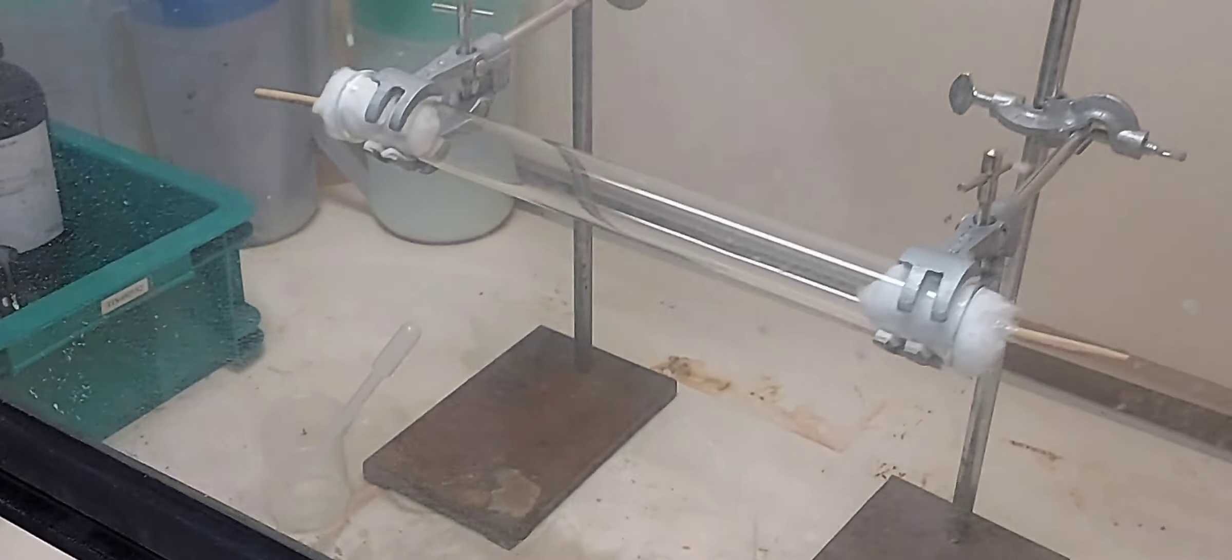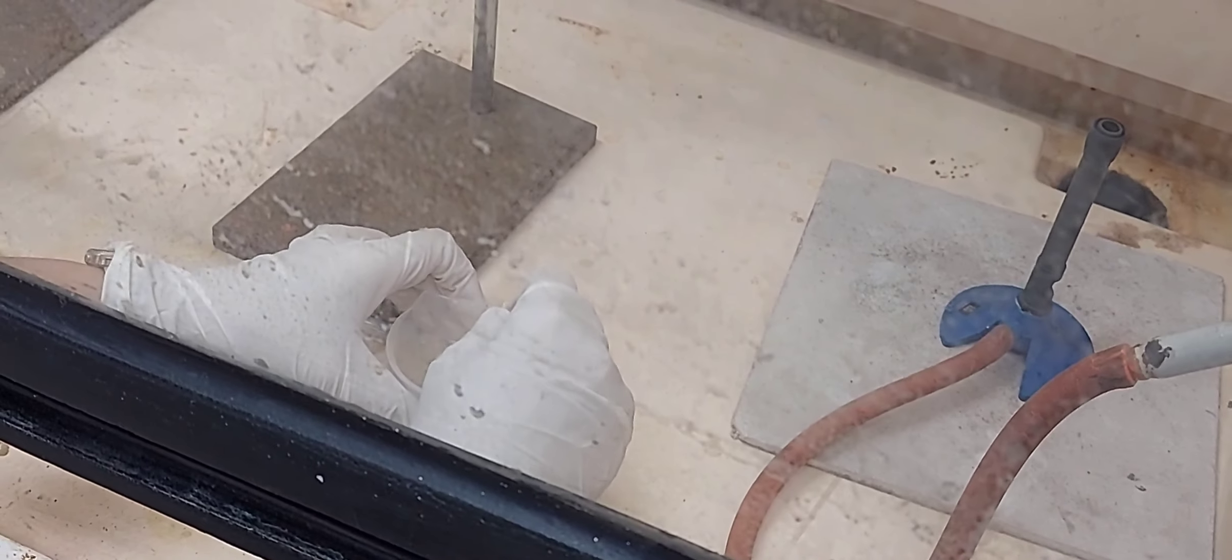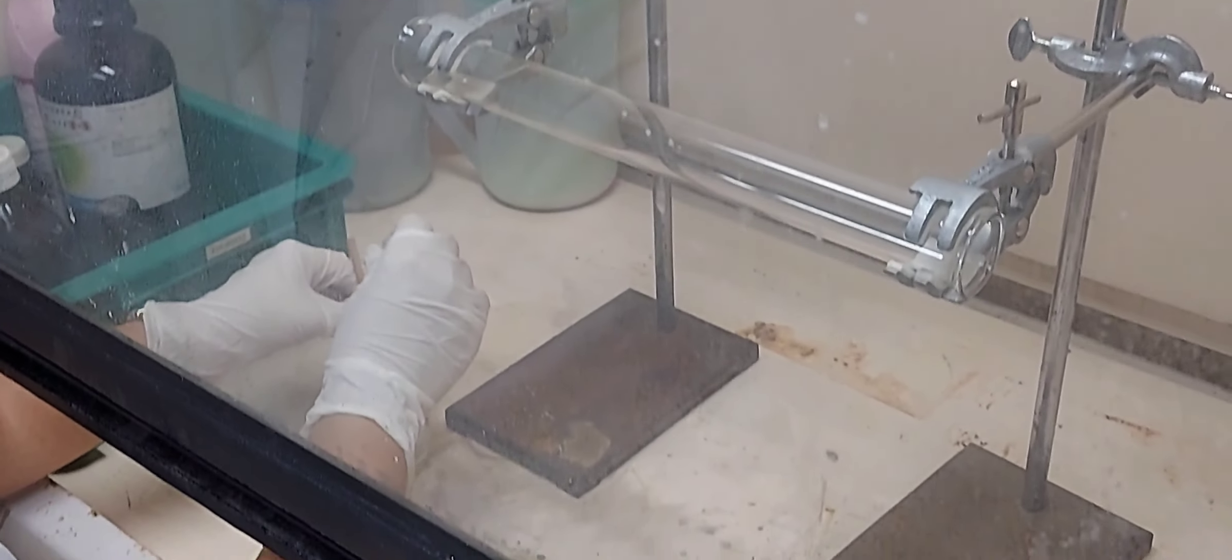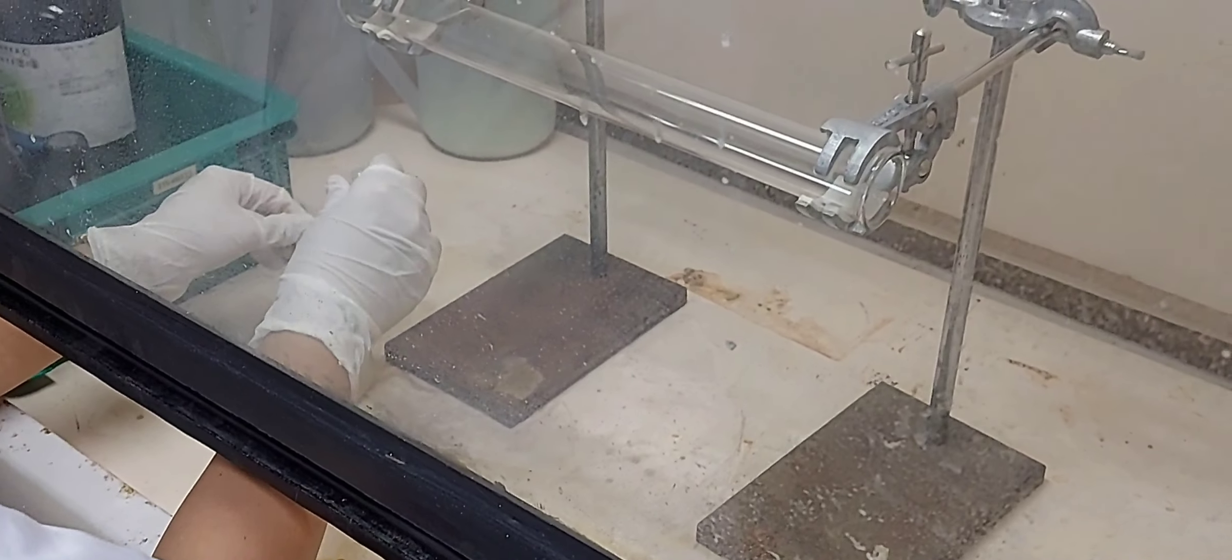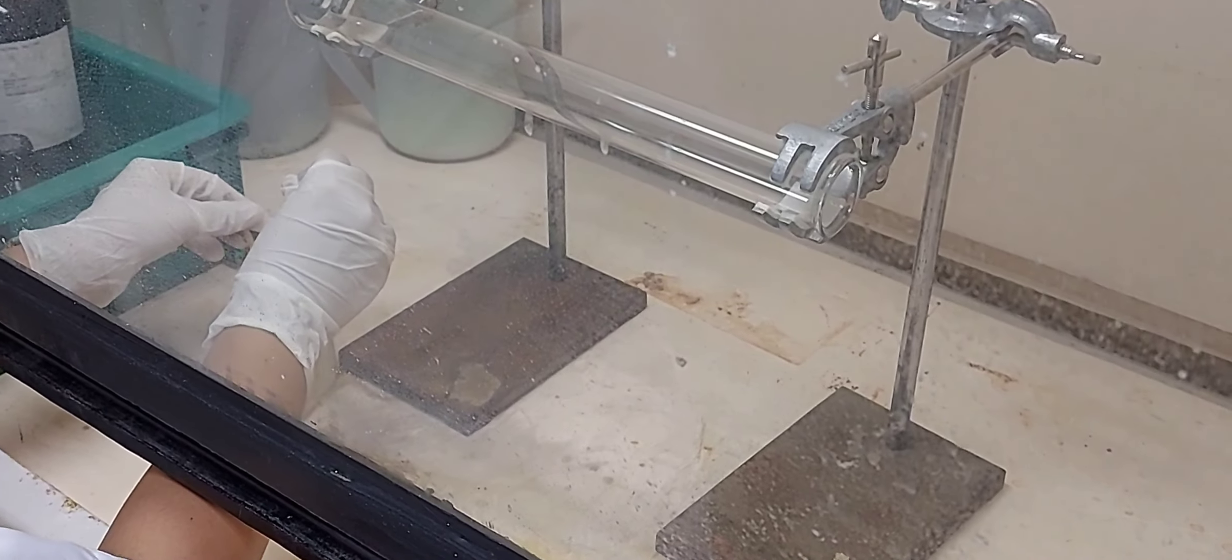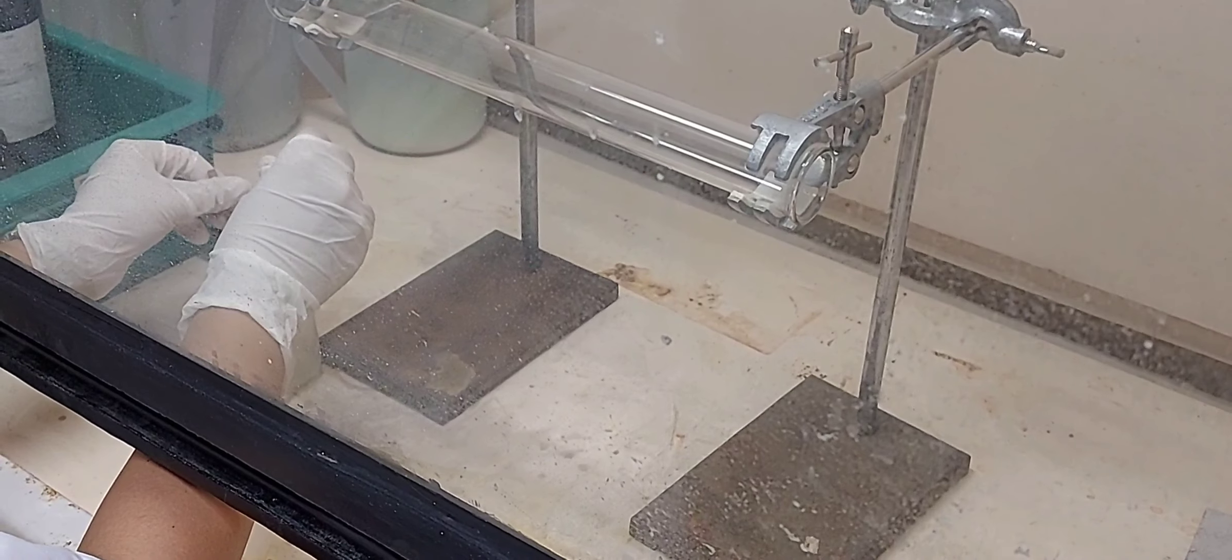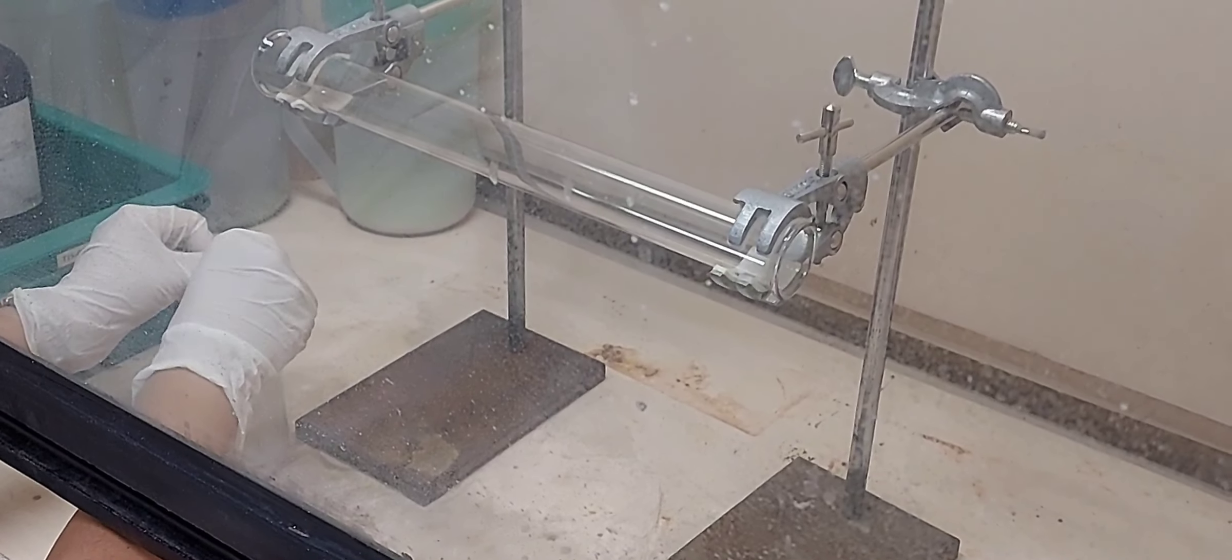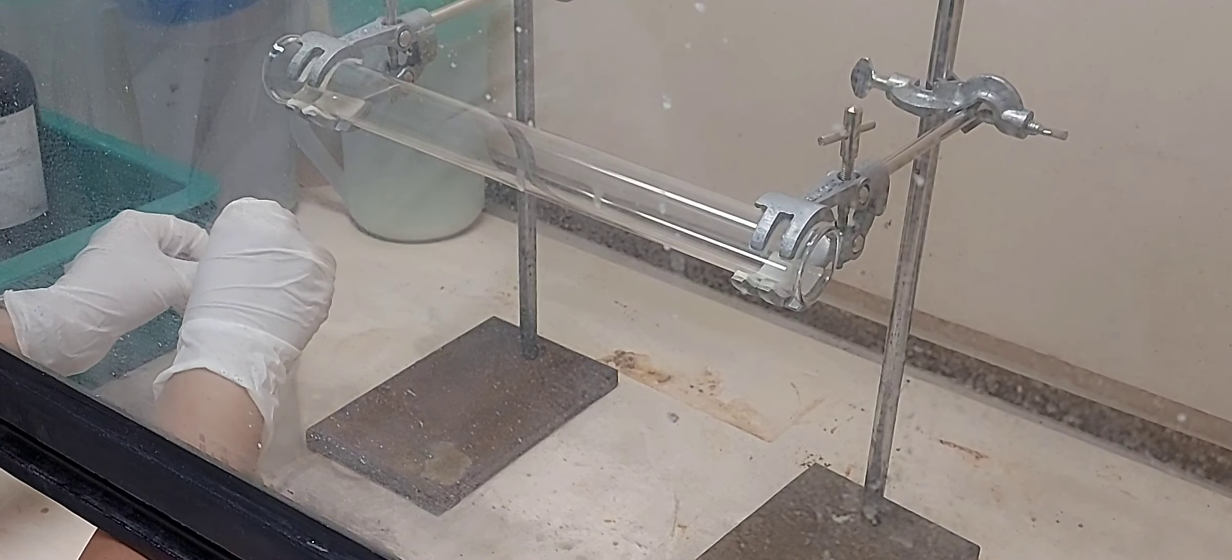So you have the apparatus set up. We have a long open tube. The tube is open at both ends and the cotton wool is dipped in the two solutions. Concentrated HCl on the left hand side and ammonia on the right hand side.